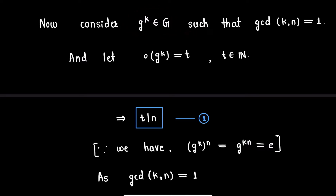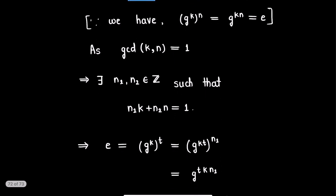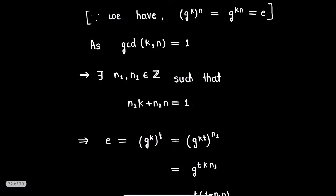Now consider an element g^k in G such that gcd(k, n) = 1, where n is the order of group G. Let the order of the element g^k be t for some natural number t. Since g^k is an element of group G, t will divide n, because the order of g^k is t and the order of group G is n. We call this expression (1).